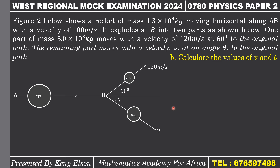We are going to resolve the velocities in the vertical and horizontal directions. For the 120 m/s component, it has a horizontal component and a vertical component. Since it makes an angle of 60 degrees with the horizontal original path, the horizontal component is 120 cos 60 and the vertical component is 120 sin 60.